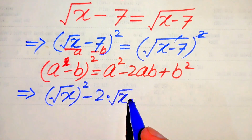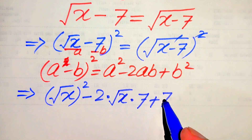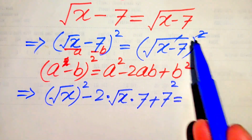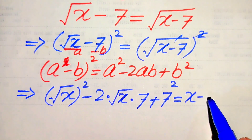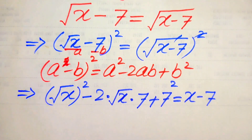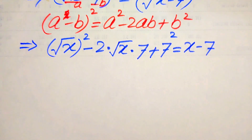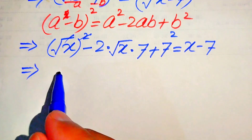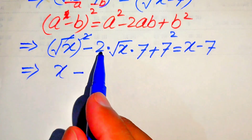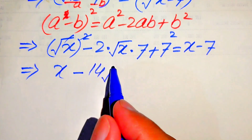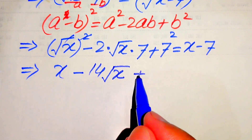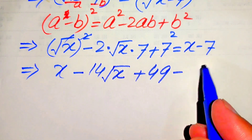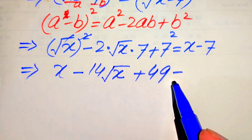Our a is square root of x and b is 7, plus b squared where b is 7. So this 2 and this square root are gone and we get x minus 7. In the next step, further simplification: 2 times 7 becomes 14 times square root of x, plus 7 squared equals 49. Here we move these two terms to the left hand side.